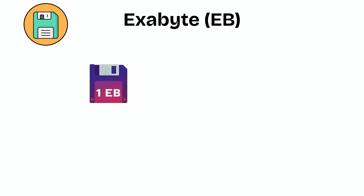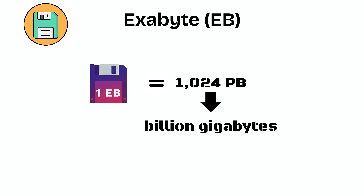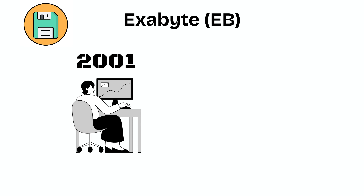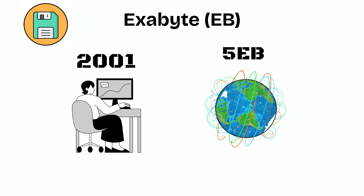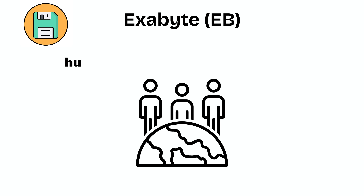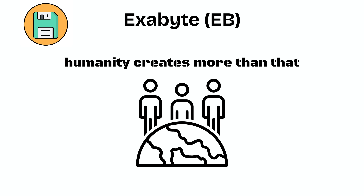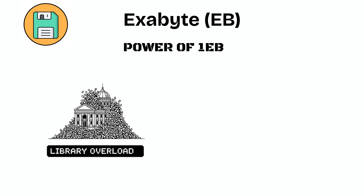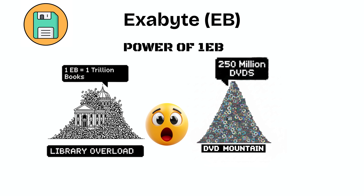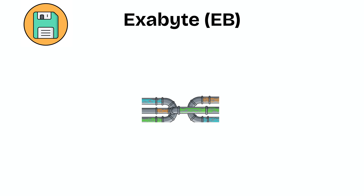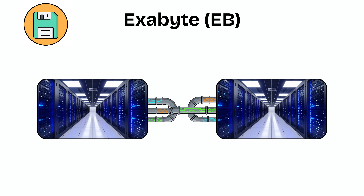Exabyte (EB). An exabyte is 1,024 PB, or a billion gigabytes. Back in 2001, researchers estimated the entire internet contained about 5 exabytes of data. Today, humanity creates more than that every single month. One EB could hold a trillion books or around 250 million DVDs. Storing an EB would require an entire warehouse of servers, all running non-stop just to keep the data accessible.